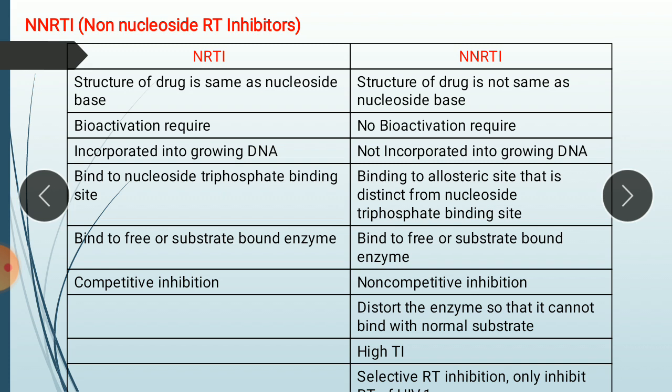Reverse transcriptase inhibitors are divided into two types. The first type is nucleoside reverse transcriptase inhibitor, that is NRTI, which we covered in the previous lecture. The second type is NNRTI, that is non-nucleoside reverse transcriptase inhibitor. As the name indicates, 'non-nucleoside' means this drug does not have structural similarity with nucleosides.